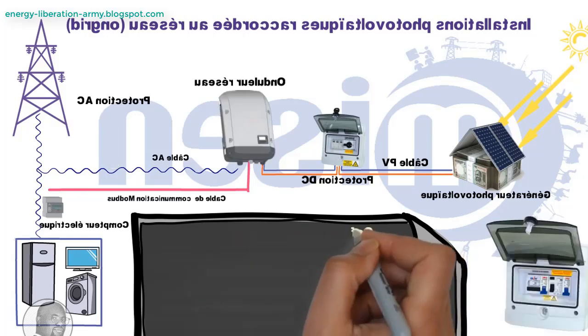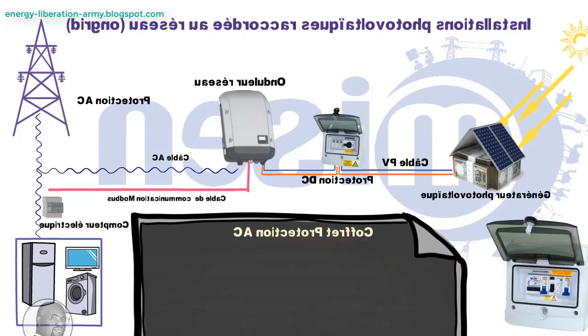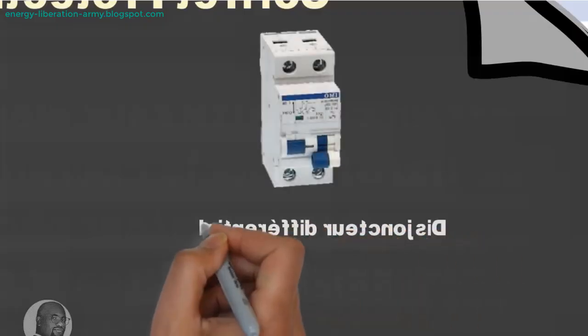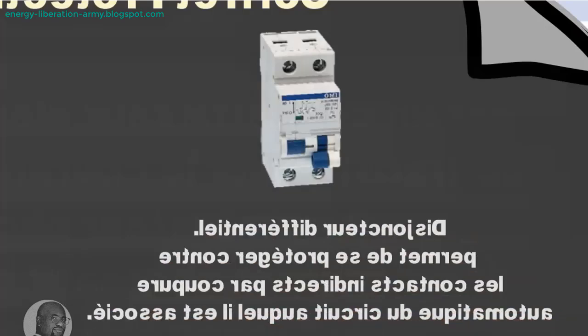The reason some people can still sell their solar power is due to server systems that manage grid connections. These servers occasionally allow solar power to be fed into the grid, but the conditions are not always favorable for the homeowner. If utility companies are already generating free energy, it raises questions about the fairness of the system and whether consumers are being misled about the financial benefits of solar energy.